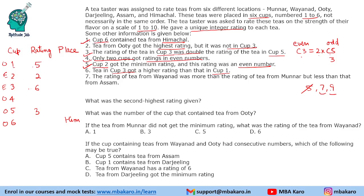Now we are left with 7 and 9. The highest rating was of Uti. Cup 6 is from Himachal, so that value will be 7, and Uti gets 9. So we have used all this information. The last clue says that the rating of tea from Vyanard was more than the rating from Munnar but less than from Assam — so M < W < A. They can take any 3 numbers from the remaining values 2, 3, 5, or 6.